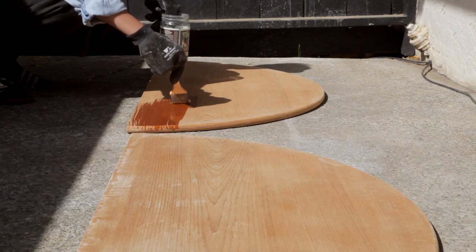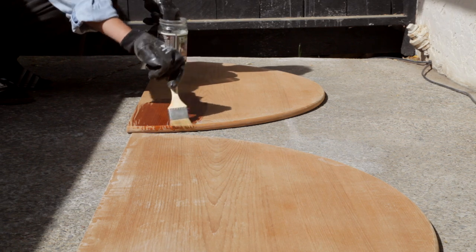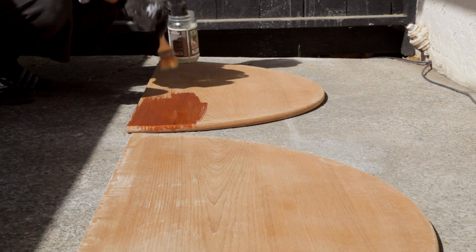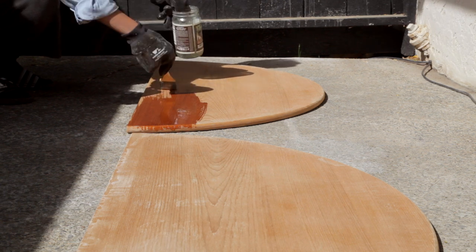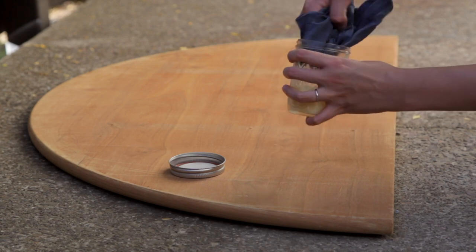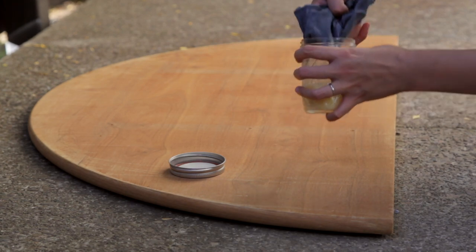After a few coats I noticed that the teak wood top was starting to lighten enough. Not as much as I had hoped, but I began to embrace the warm caramel color this wood gave off. It was at this point that I started to see what the finished product would look like.